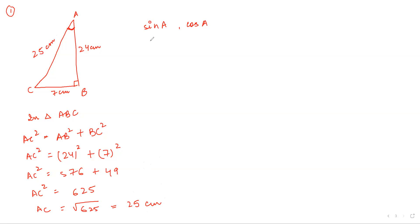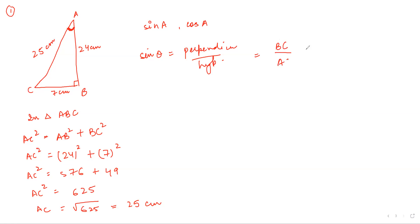Now we come to ratios. Sine A is perpendicular upon hypotenuse. If this is the angle A, which side is perpendicular? BC. So BC upon AC — that is 7 centimeters divided by 25 centimeters. The units cancel out since it's a ratio, so sine A equals 7 by 25.